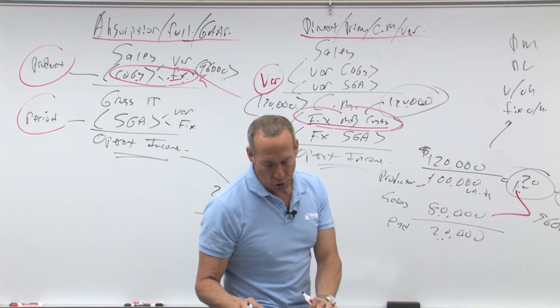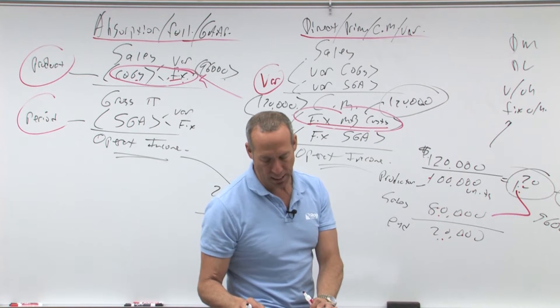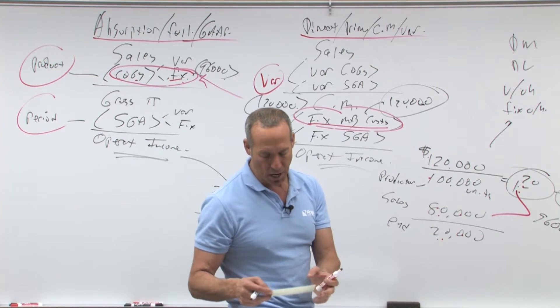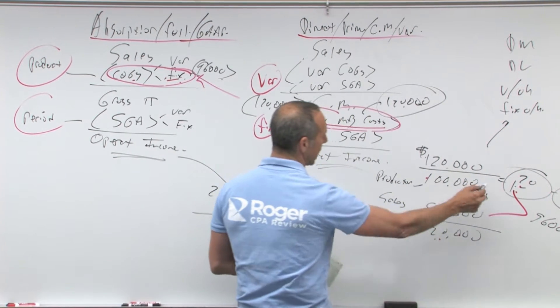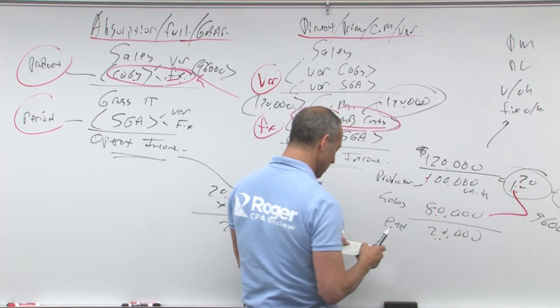All right, now if we were to go through and actually do the income statements for these, let's make up some numbers. Let's pretend, again, production's 100,000 units, sales are 80,000.